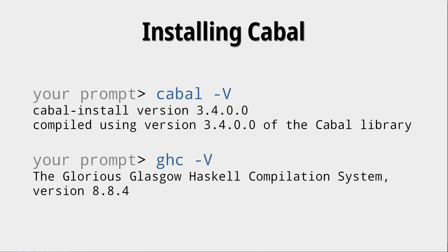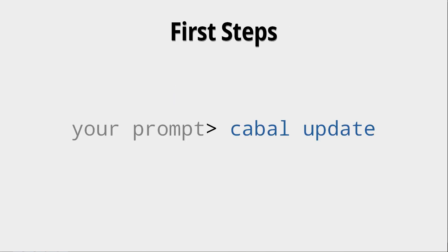After installing Cabal, you should check that everything is in order. On Windows you do that in CMD, on Linux in whatever shell you are using, by printing the version of Cabal and GHC — both should show up. If nothing shows up, something has gone wrong in your installation. After everything is installed, you should first call `cabal update`, which will update the repository information for Cabal. After that, we can finally start building our first project.